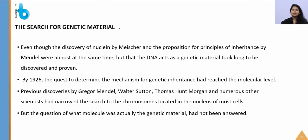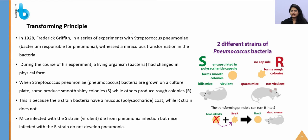Even though Miescher discovered nuclein and Mendel proposed inheritance principles around the same time, DNA as genetic material took long to prove. The first key experiment was the transforming principle by Frederick Griffith in 1928. Griffith worked with two strains of Pneumococcus: S-strain (smooth, virulent — kills mice by causing pneumonia) and R-strain (rough, non-virulent — does not harm mice).